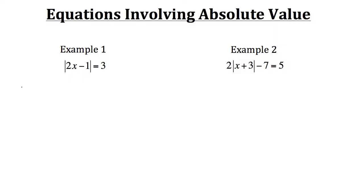So when we solve this we need to consider both cases. Either 2x minus 1 could equal 3, or 2x minus 1 could equal negative 3 on the number line.